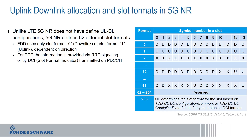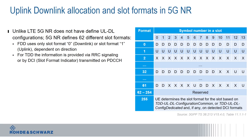5G NR supports FDD and TDD as duplex modes. Studying the specification, there are no uplink/downlink configurations like in LTE that we can rely on for the TDD duplex mode. Instead, there are slot formats defined — 62 of them — which basically allow a very flexible configuration on how to utilize the available spectrum.